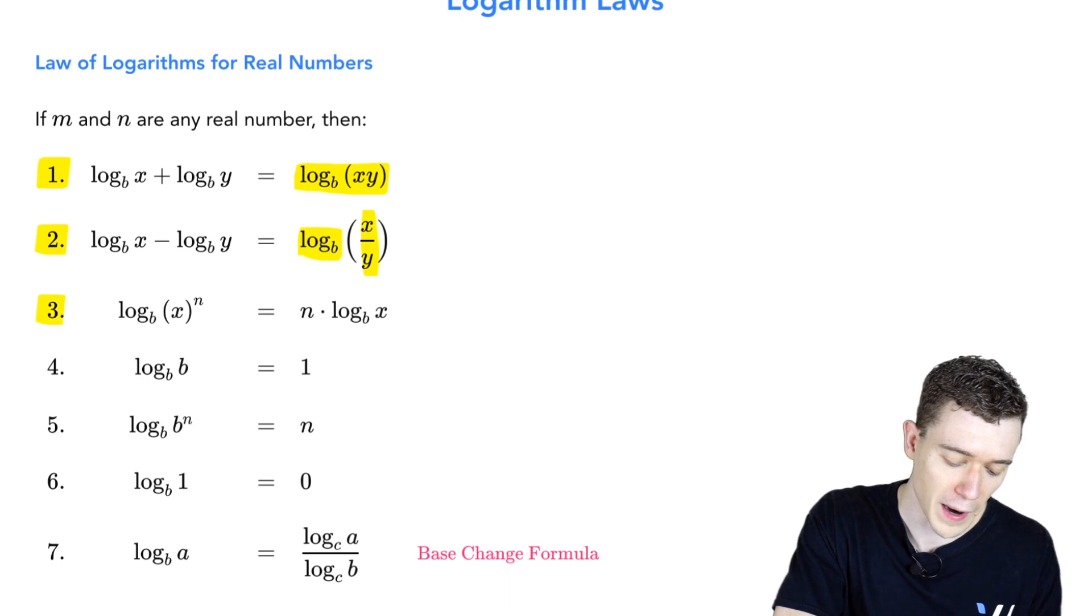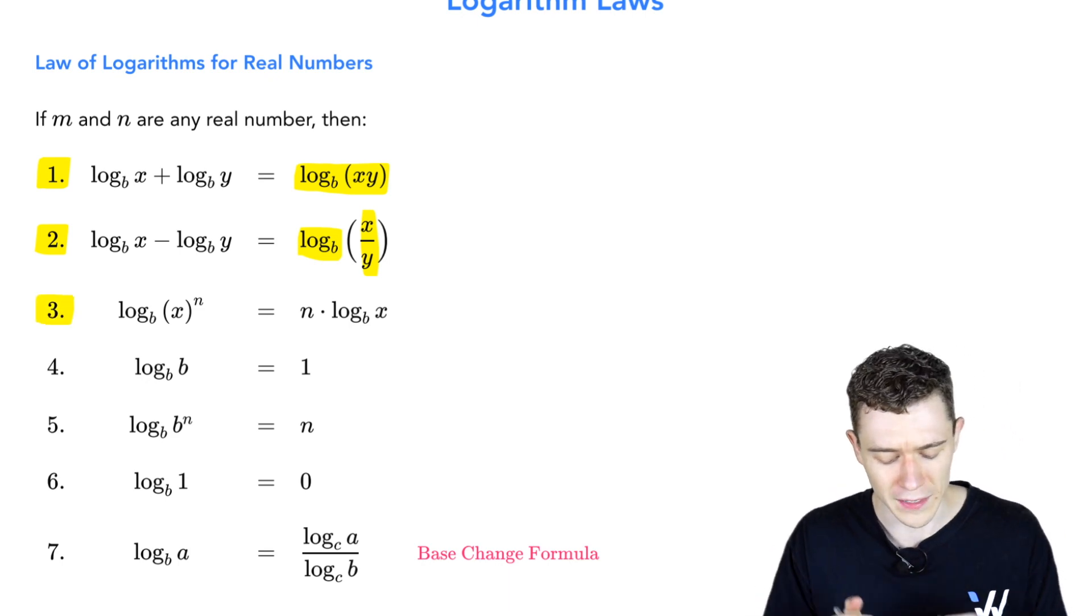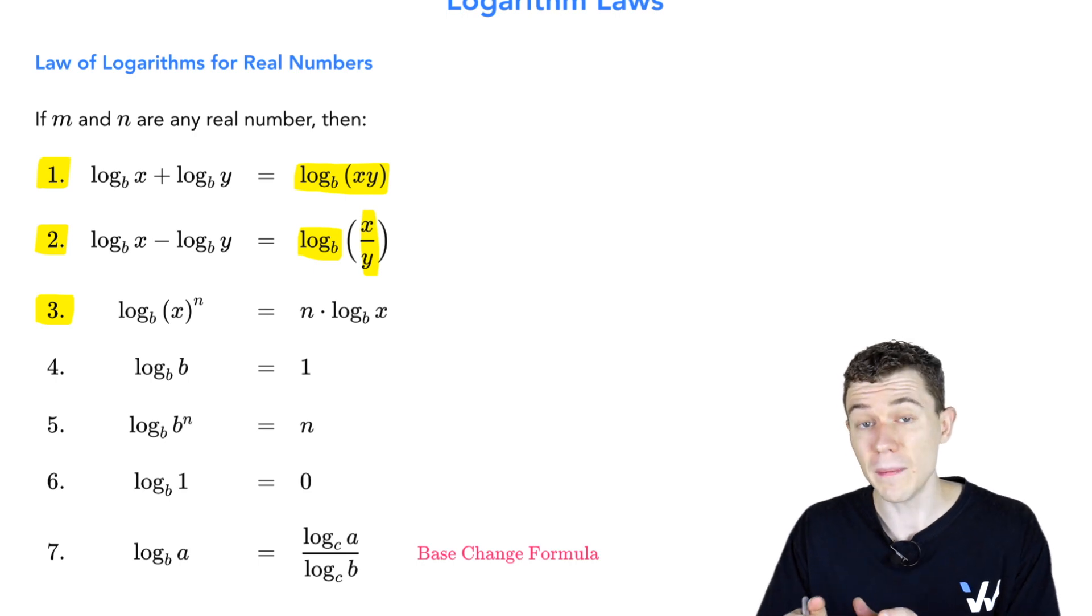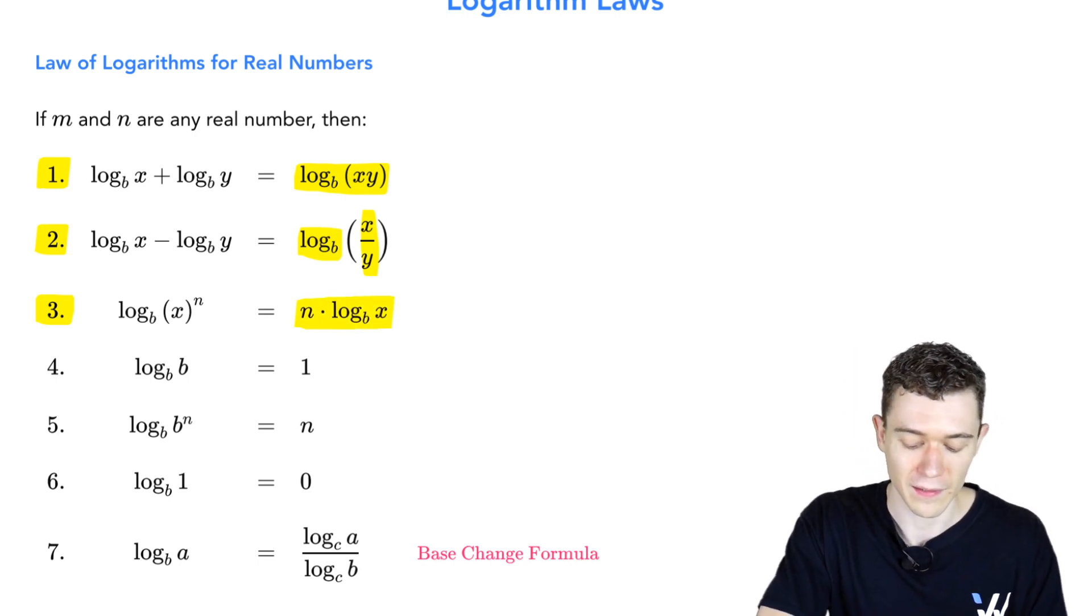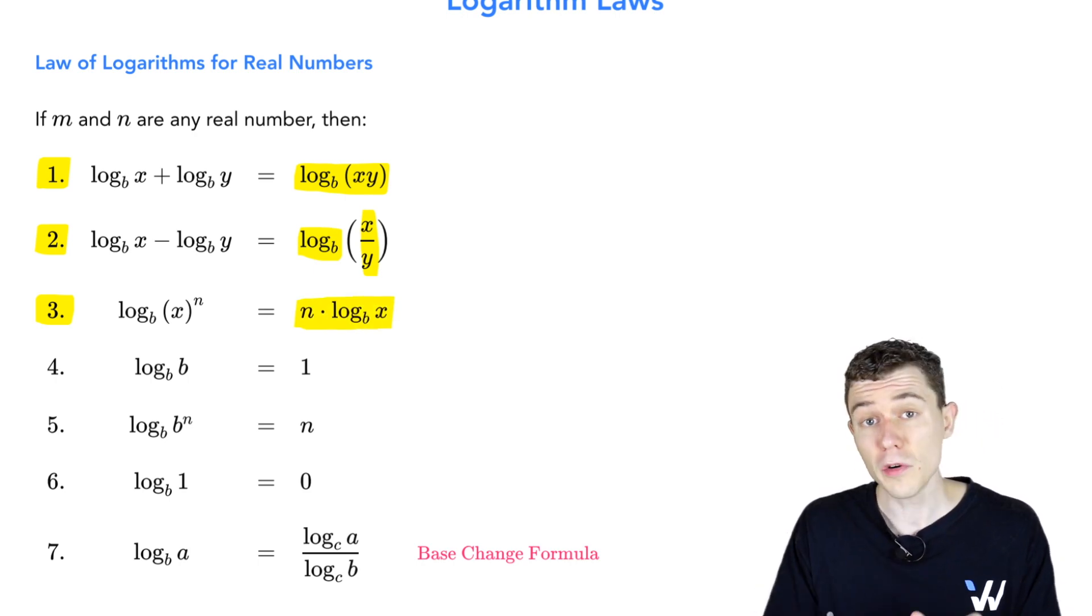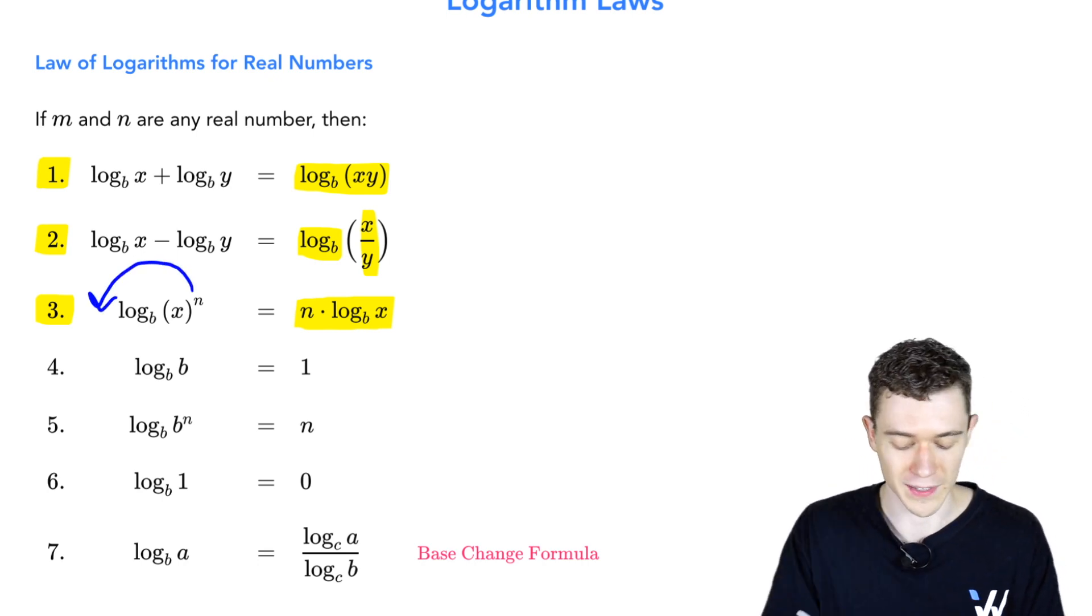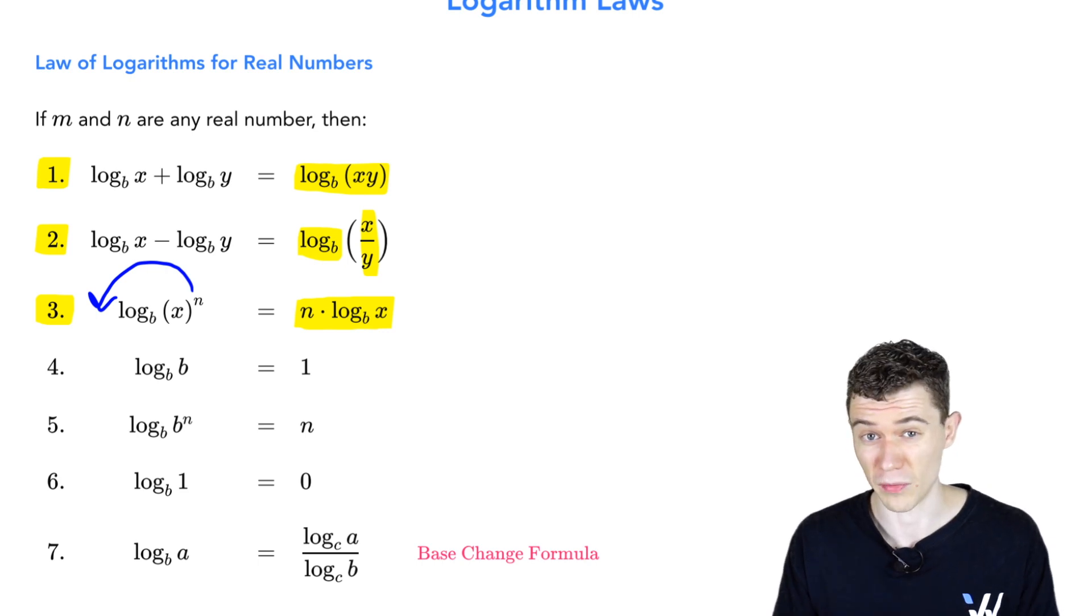Moving on, a very powerful one. You'll absolutely need to know this one. Log base b of x to the n is the same thing as n log base b of x. In other words, when we have the log of something to a power, an exponent, we can drop that exponent down front. Very powerful.